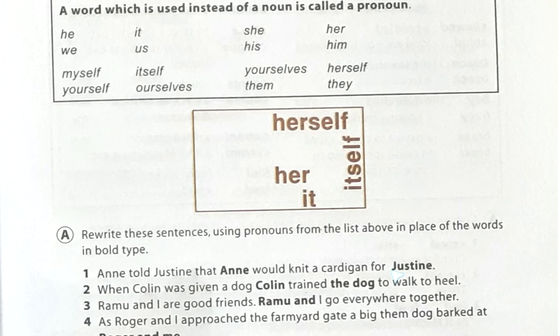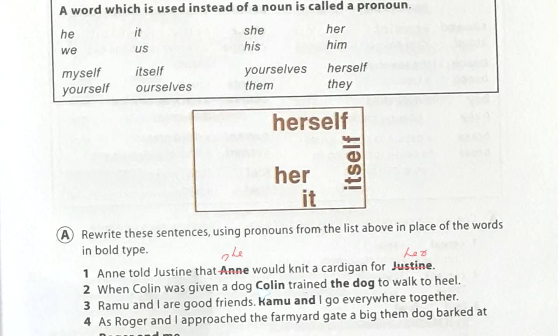Number one: 'Ann told Justin that Ann would need a cardigan for Justin's.' Here we will replace 'Ann' with 'she,' and replace 'Justin' with 'her.' Number two: 'When Colin was given a dog, Colin trained the dog to walk to hill.' This is also easy — replace 'Colin' with 'he' and replace 'the dog' with 'it.'